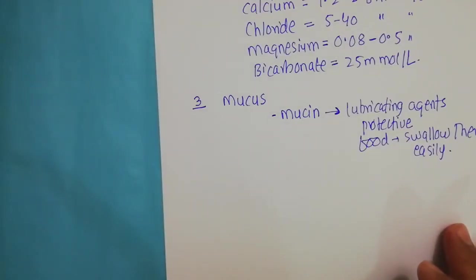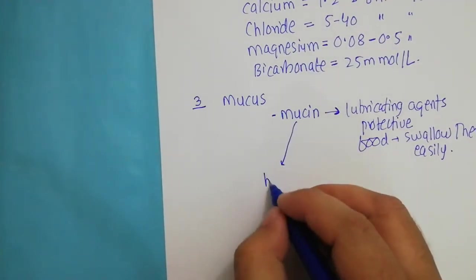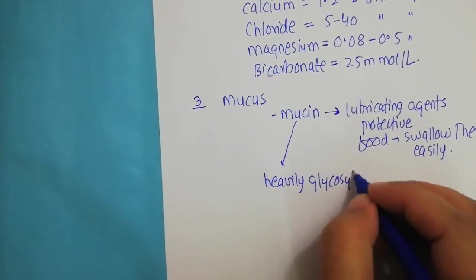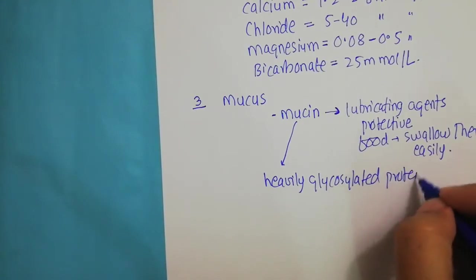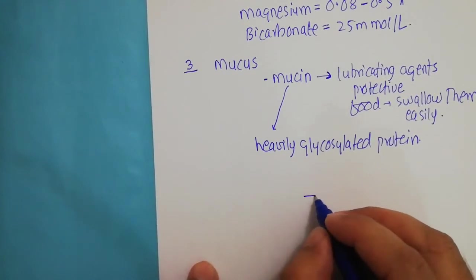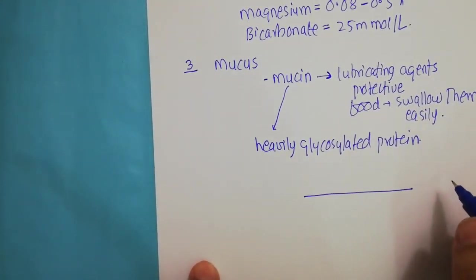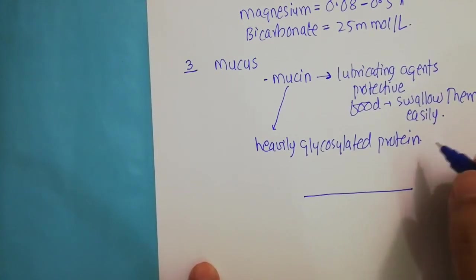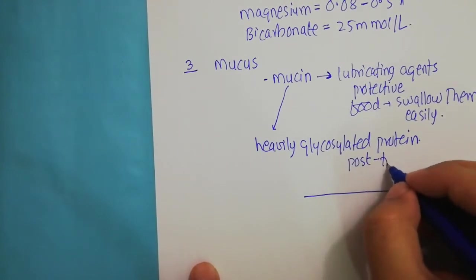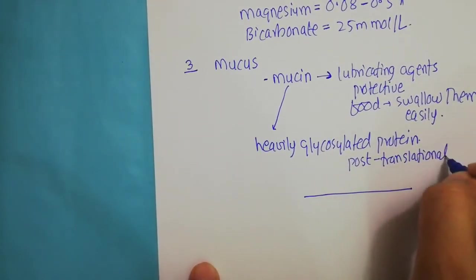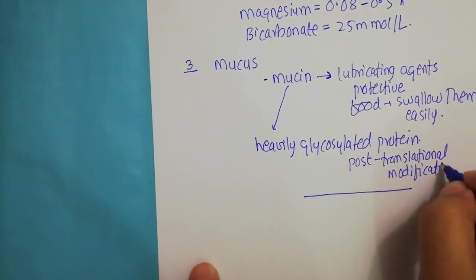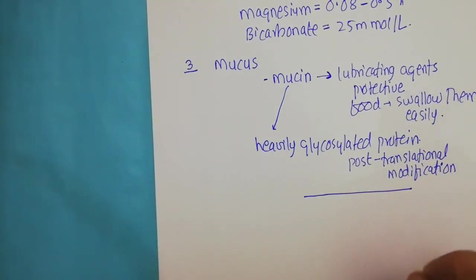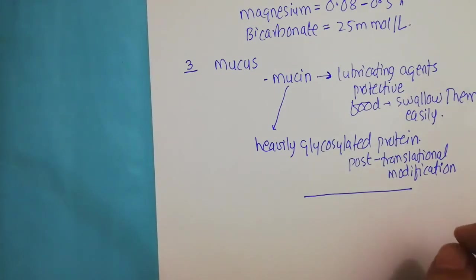If you look at the structure of the mucins, these mucins are heavily glycosylated proteins. What this means is that there is a gene for the mucin that is transcribed and translated, and in the end you get a protein. But this protein goes through post-translational modifications. After the synthesis of this protein, different kinds of other moieties are added to it. The addition of these moieties is important to give this protein a particular 3D structure and hence a particular function.